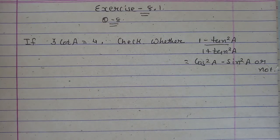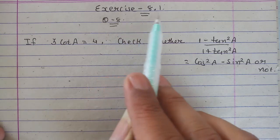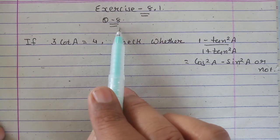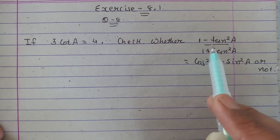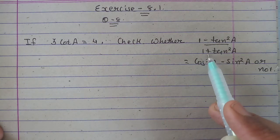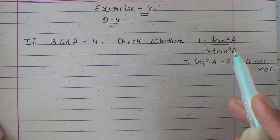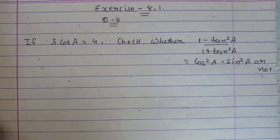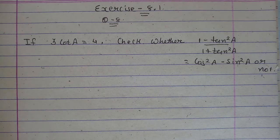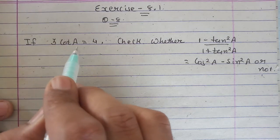Hello students, in this session we will continue with exercise 8.1 question number 8. If 3 cot A is equal to 4, check whether (1 - tan²A)/(1 + tan²A) is equal to cos²A - sin²A or not. What we have given is 3 cotA is equal to 4.